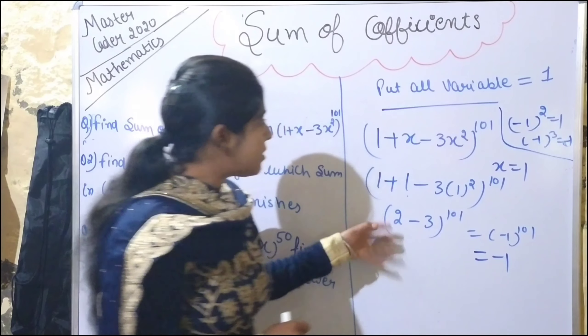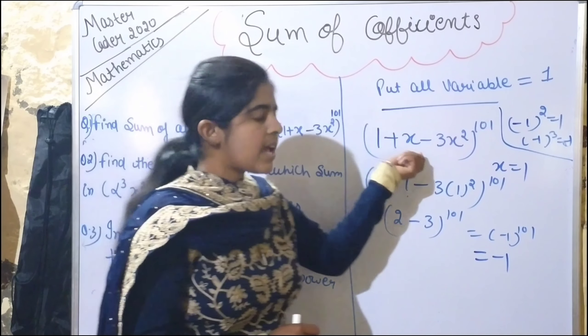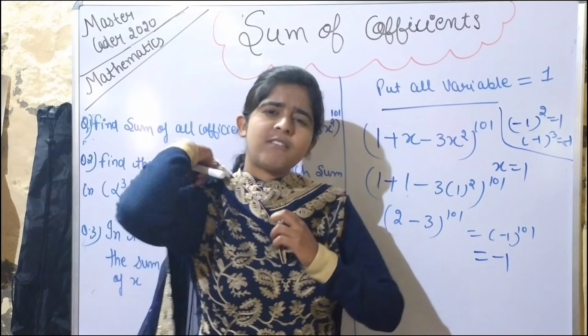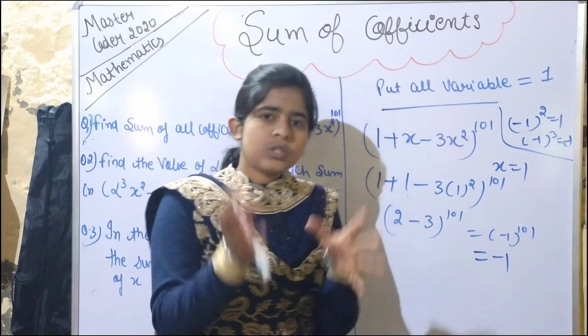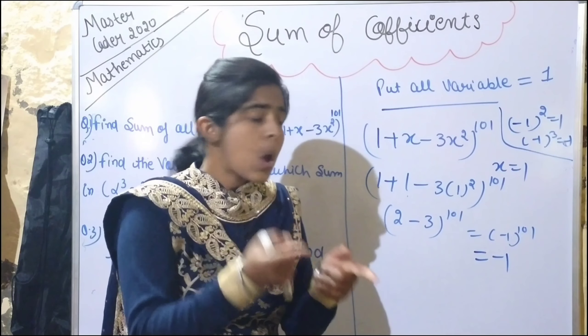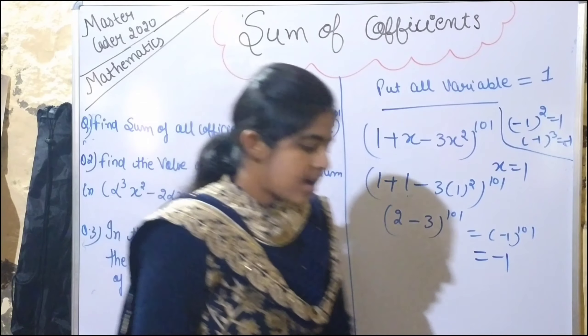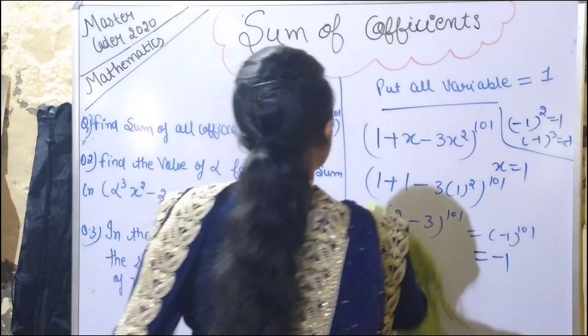So this is the basic thing. The answer is -1. That was very easy, nothing difficult here. Just put the variable—whether it's x, y, or z—equal to one and you'll get the answer. Now we move to our second question.